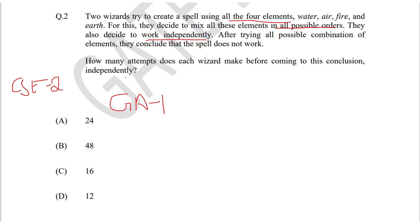Basically, there are two wizards which try to combine the four elements in all possible orders to check if the spell works. We should calculate how many combinations any one of the wizards makes before coming to the conclusion.